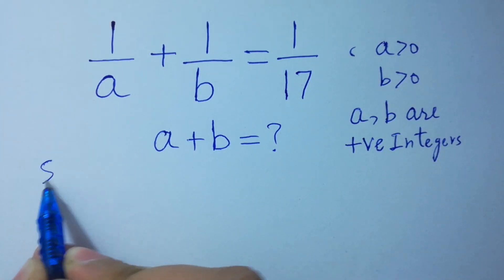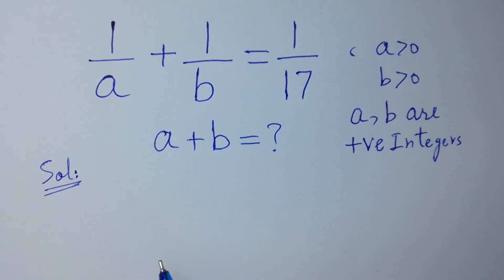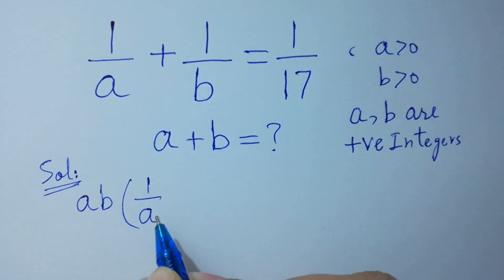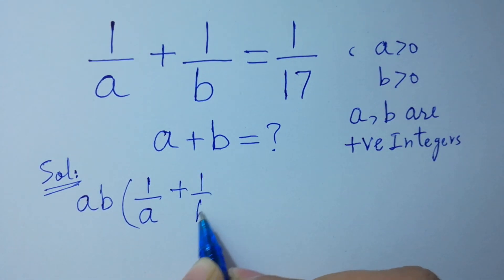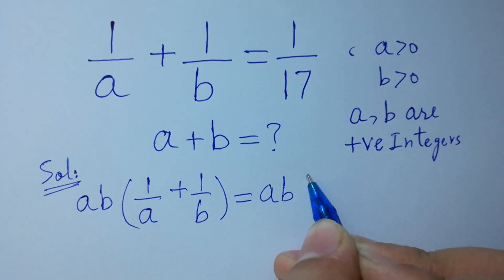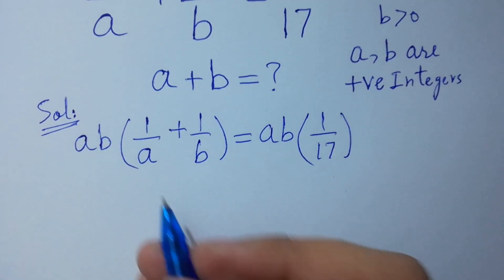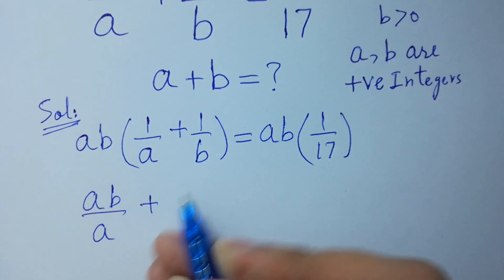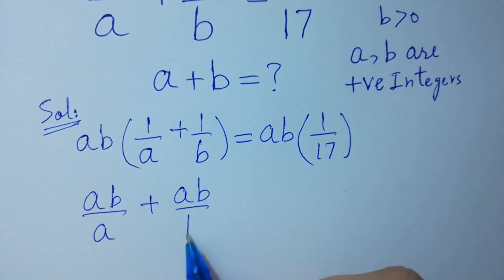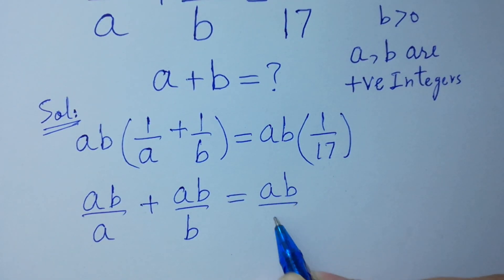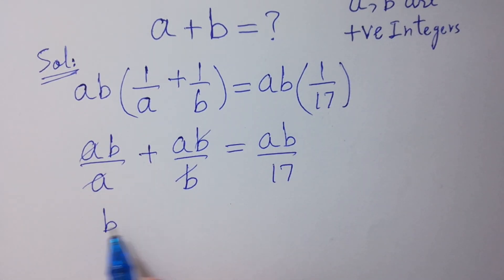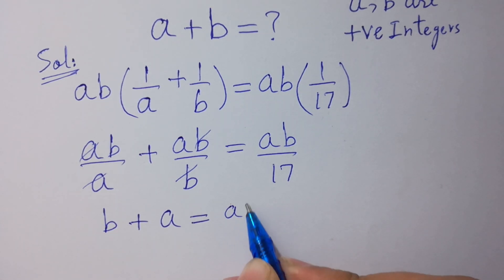To solve this, first of all we multiply both sides by ab. So ab times 1 over a plus ab times 1 over b equals ab over 17. The a's cancel and the b's cancel, giving us b plus a equals ab over 17.